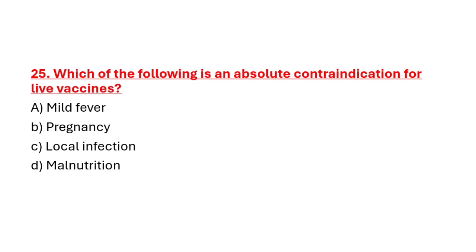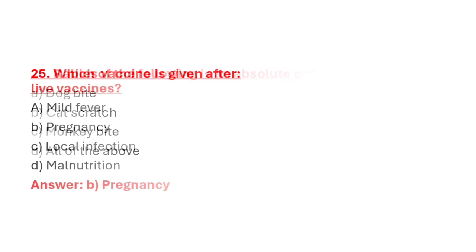Question 25: Which of the following is an absolute contraindication for live vaccines? Option A: Mild fever. Option B: Pregnancy. Option C: Local infection. Option D: Malnutrition. Correct answer is Option B: Pregnancy.